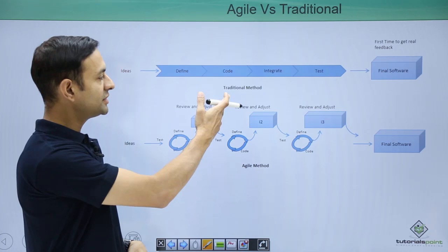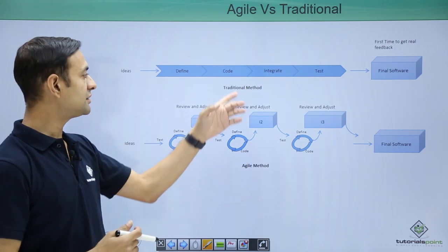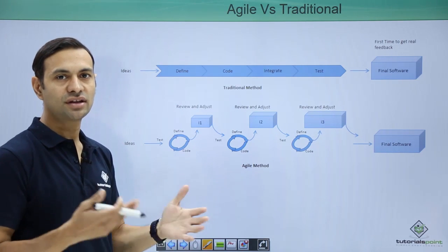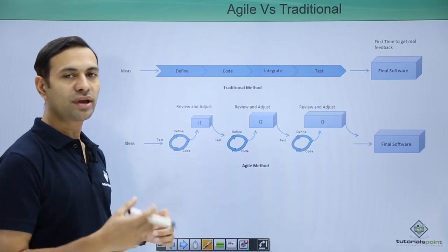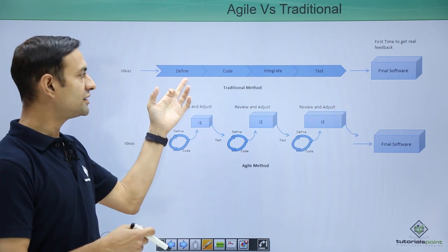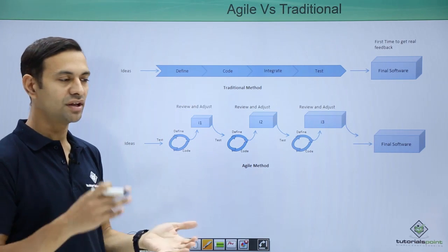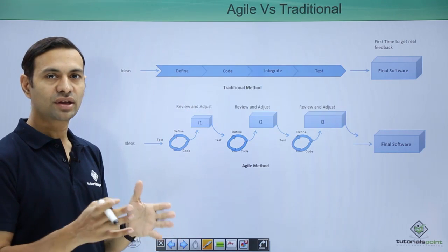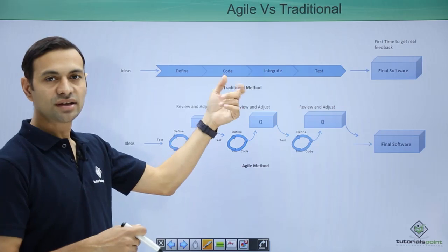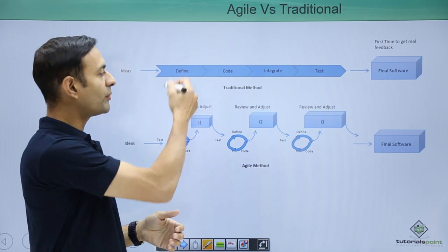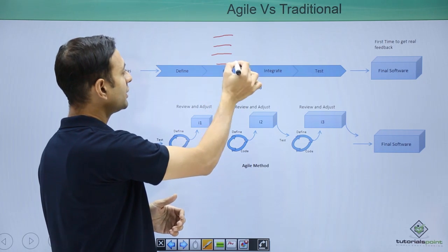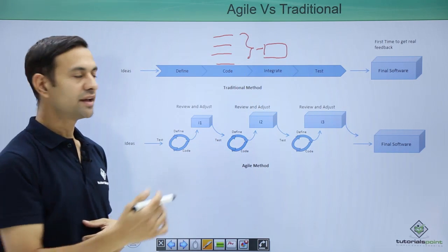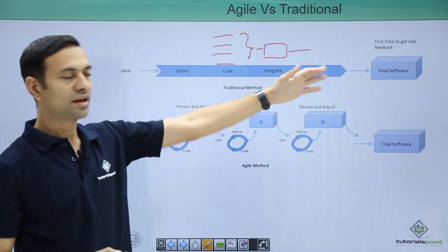Here we compare the traditional method of development and Agile method of development. In the traditional method we have ideas — basic requirements received from clients. We define requirements, make documents with hundreds of requirements written in a short and crisp way, then we plan it — class diagrams and everything — then we code it. Coding is done by multiple teams, say 5 teams, then we integrate their code, the product gets ready, and then the testing team tests it and the final software gets prepared.